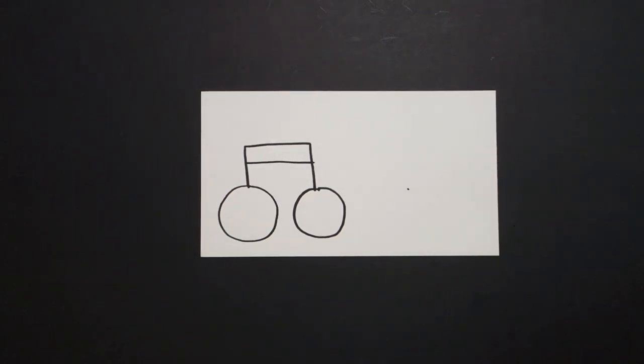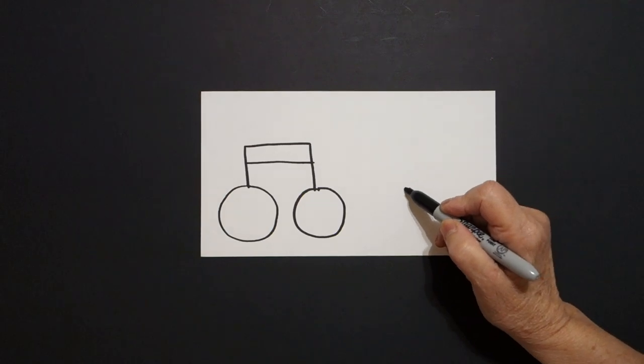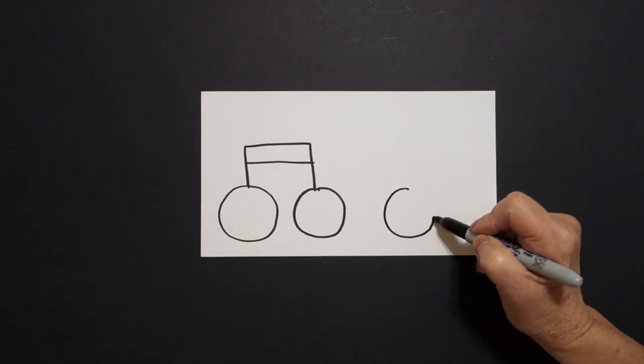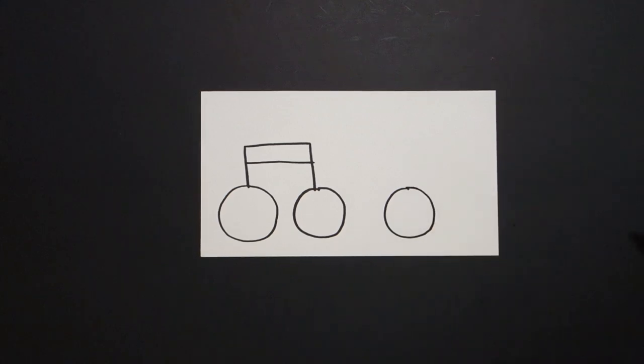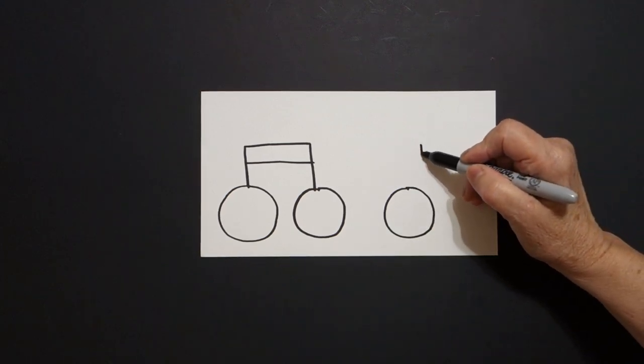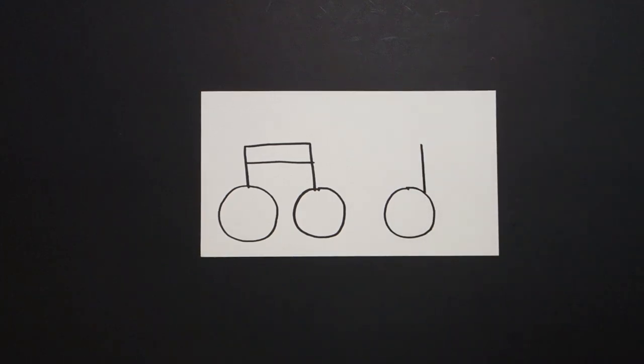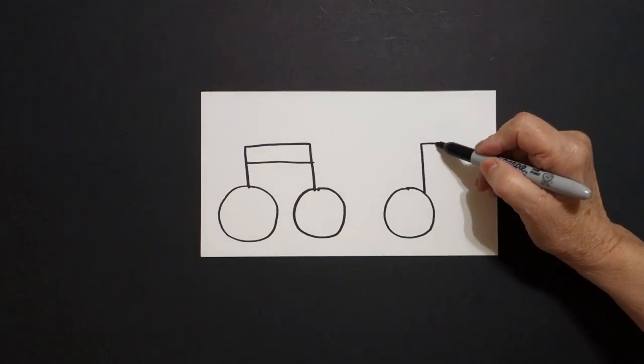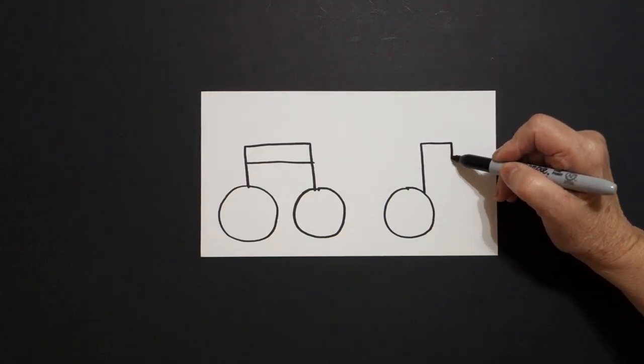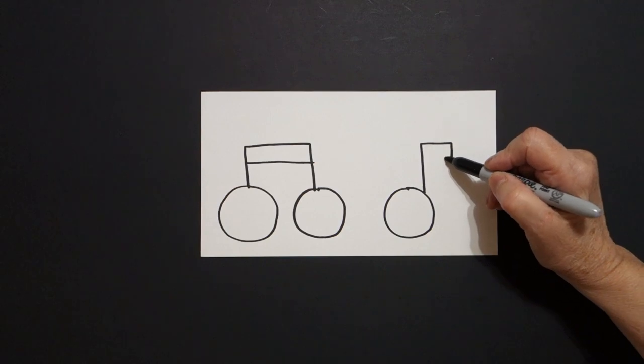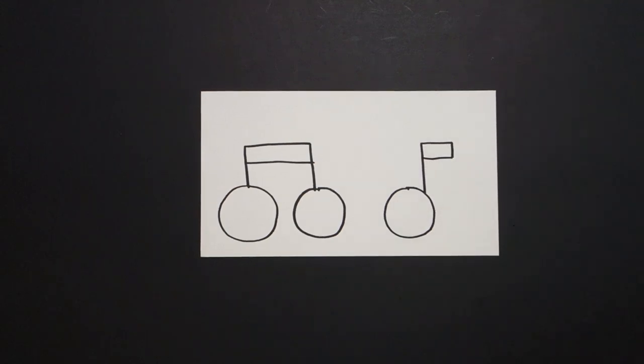Now I come over here towards the right, put a dot and from that dot I'm going to draw a curve line, keep going, keep going, up, connect. I'm going to draw a straight line down, connect, straight line out, straight line down, straight line in, connect.